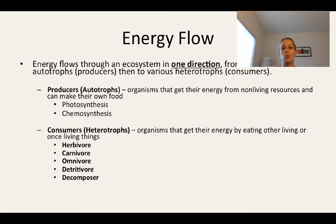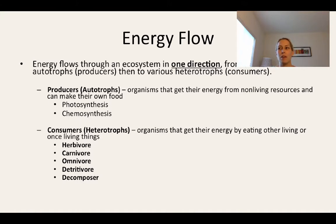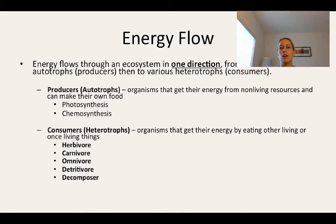Carnivores eat only animals, so things like a hawk or a lion. An omnivore eats both plants and animals — an example would be a bear, which eats berries, nuts, or seeds, but also might eat fish. Humans are also an example of an omnivore — you might eat a steak with salad, so you've eaten both plants and animals.